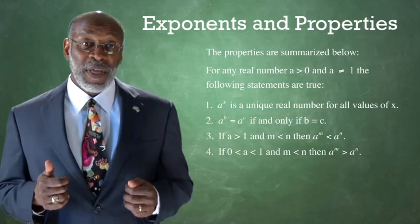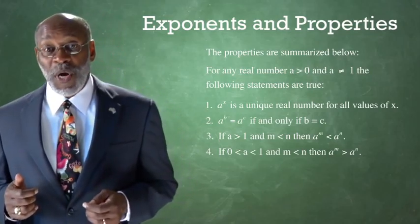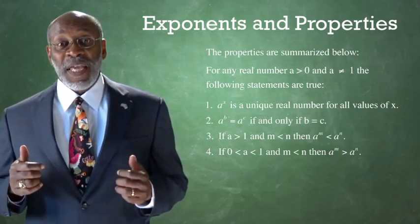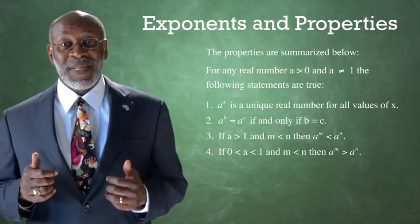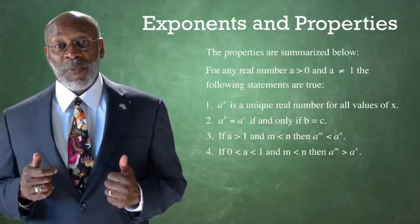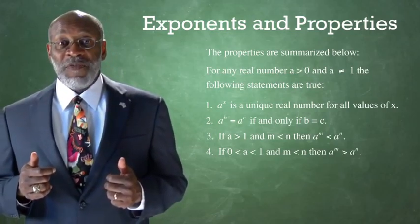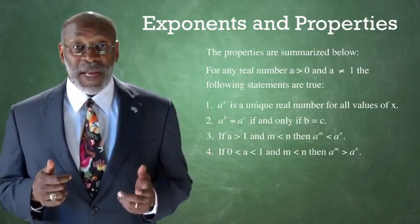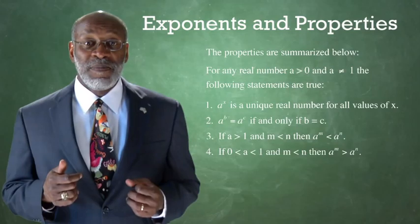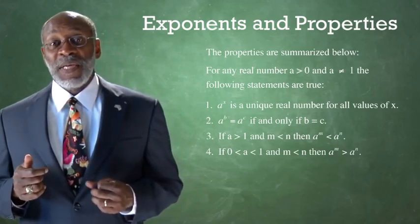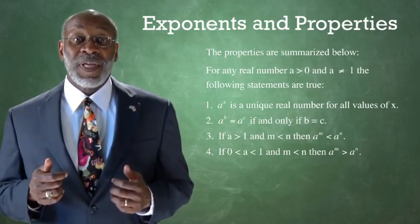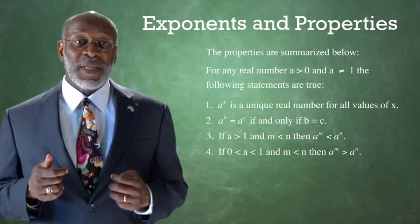Property 3: If a is greater than 1 and m is less than n, then a raised to the power m is less than a raised to the power n. Property 4: If a is a fraction — that is, if a is greater than 0 and less than 1 — and m is less than n, then a to the m is greater than a to the n.